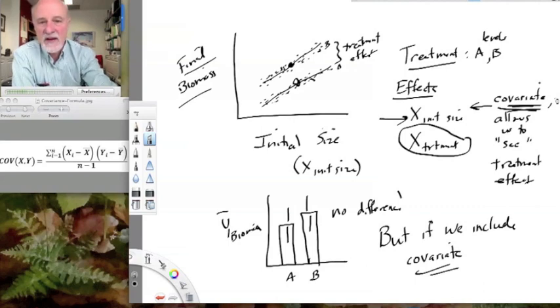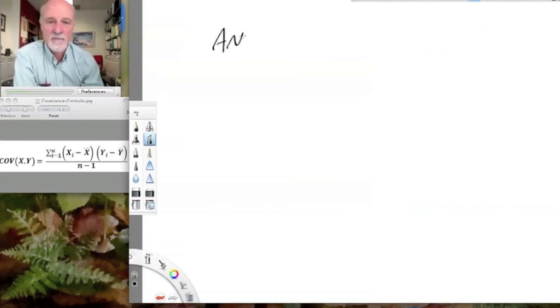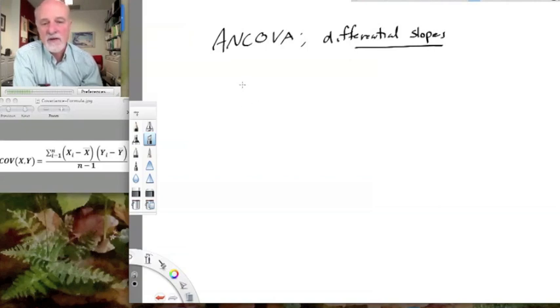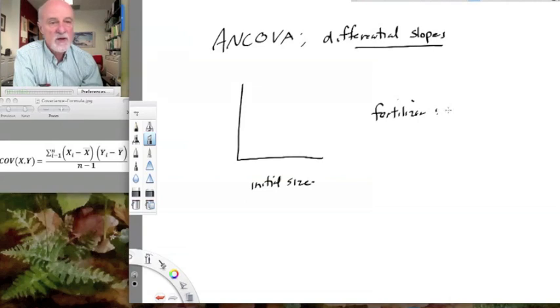The second use of ANCOVA is looking at differential slopes of response. So, again, I'll keep it simple here and just do a two-way. But what if, for example, we had a covariate and it might be something like initial size? And then we treated these individuals randomly with fertilizer. So we have fertilizer low, medium, and high.